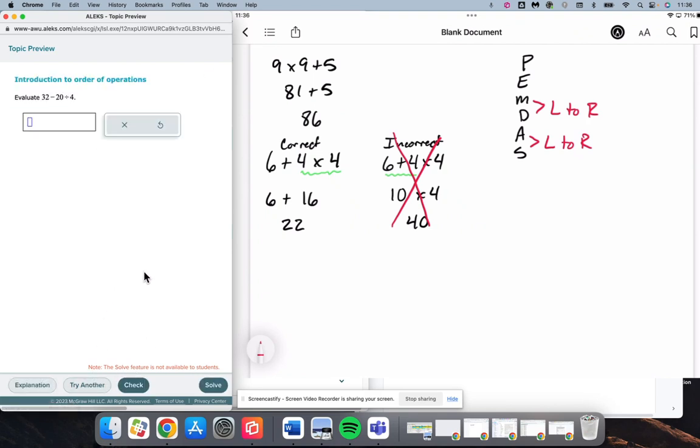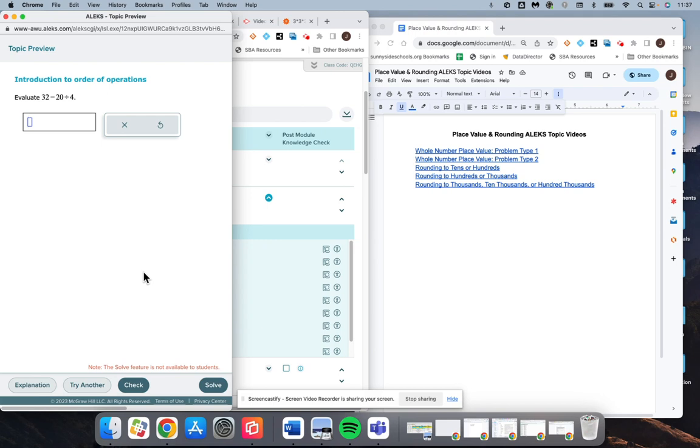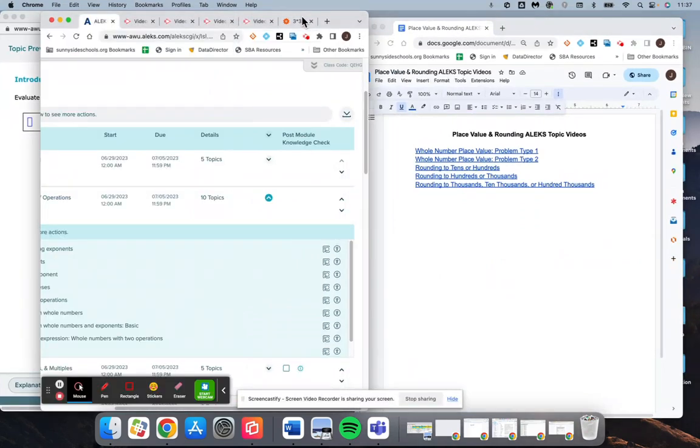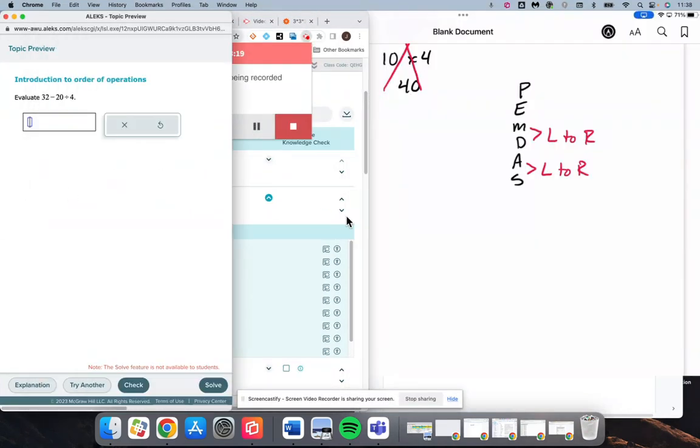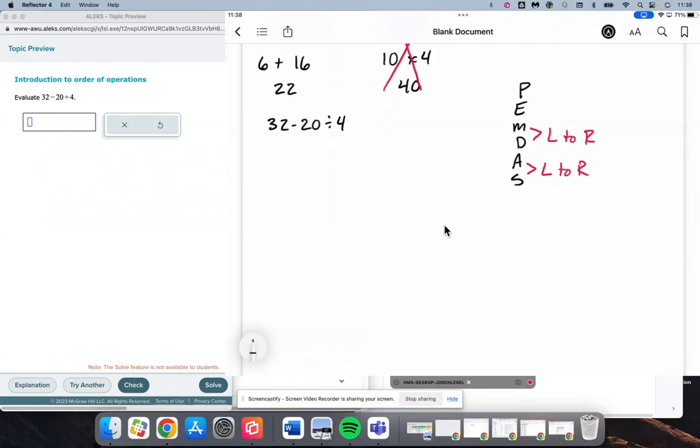We'll do another. We've got 32 minus 20 divided by 4. And so I'm going to scoop my order of operations down here, so I've still got it right where I can see it. And again, it would be, I'll be right back with my iPad screen back. Okay, sorry about that. So if I did just the way I see it, 32 minus 20, I would get the wrong answer. So similar to the last one, we will do this one twice. The correct way and the incorrect way.